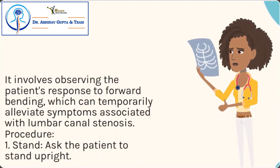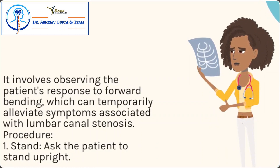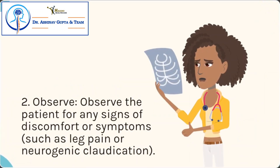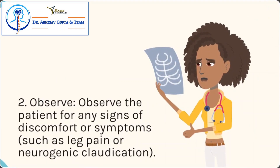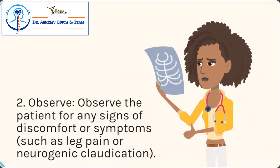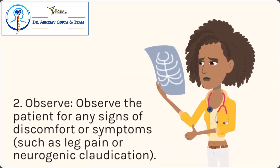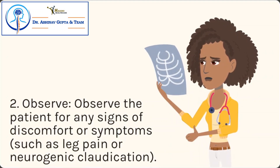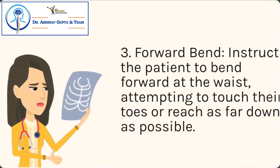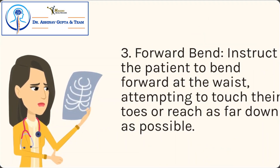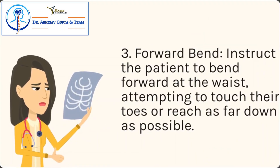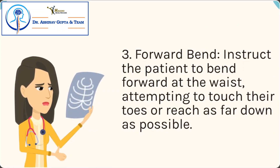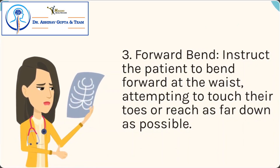Procedure: Step 1 — Ask the patient to stand upright. Step 2 — Observe the patient for any signs of discomfort or symptoms, such as leg pain or neurogenic claudication. Step 3 — Instruct the patient to bend forward at the waist, attempting to touch their toes or reach as far down as possible.